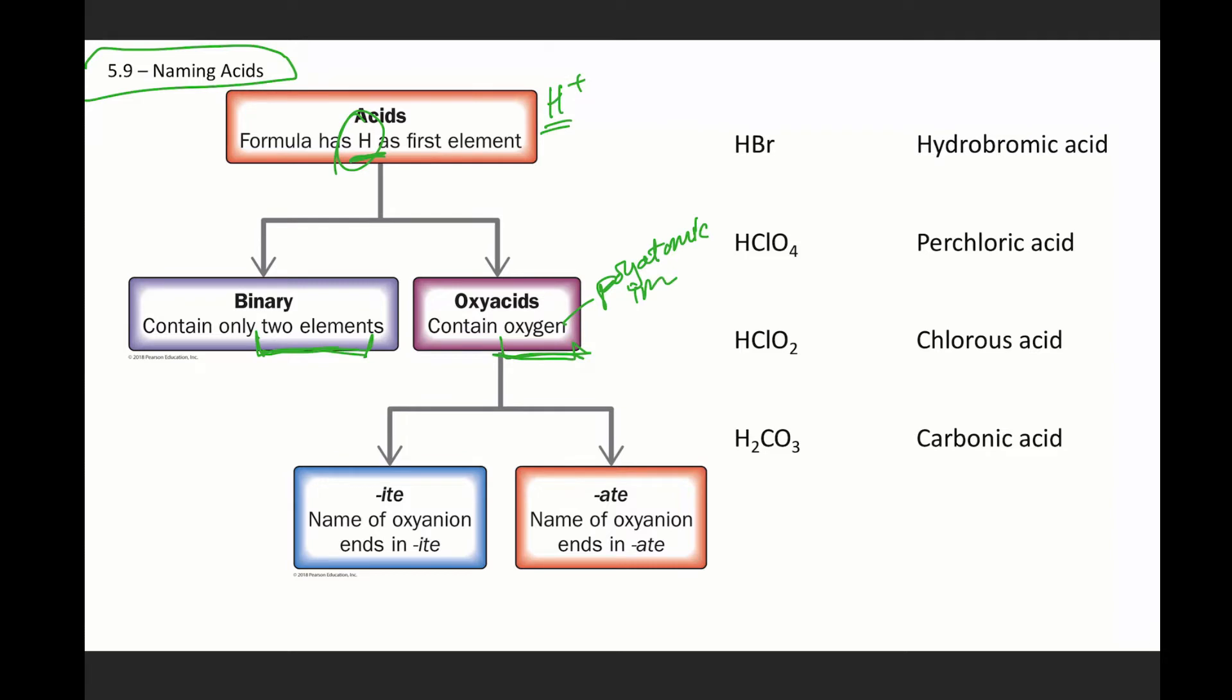And those are our options. So our acid can be binary, so only two elements, so it'll be H and an element. Or it can be an oxyacid, which means H and a polyatomic ion. Yes, those are your two options for acids. Now, an oxyacid can be further differentiated where does that polyatomic ion end in '-ite', or does that polyatomic ion end in '-ate', because then that tells you how you're going to write your oxyacid's name.